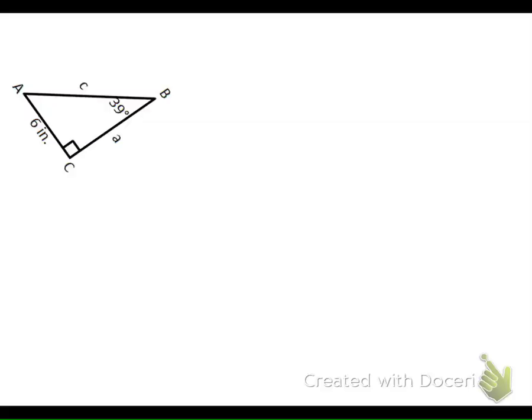When writing a trig ratio to solve our equation, like any equation, you can only find one variable at a time. You always have to use two numbers and one thing you don't know. With trig, you always have to have an angle, and then you're finding a side while being given another side. The first thing to do is circle the two numbers that you have - the 39-degree angle and the 6-inch side. Then circle the thing you're solving for. You're always using three things: two numbers, one letter, one angle, two sides.